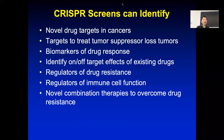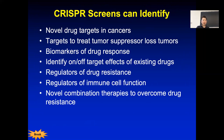In summary, CRISPR screens can identify novel drug targets in cancer, identify targets for tumor suppressor-loss tumors, identify markers of drug response, show whether drugs are on-target or off-target, identify regulators of drug resistance, identify regulators of immune cell function, and identify novel combination therapies to overcome drug resistance. It's a really, really powerful technique.